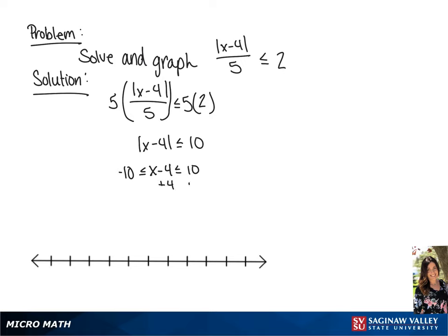Now we're going to add 4 to all sides of the inequality, giving us x is greater than or equal to negative 6, and x is less than or equal to 14.